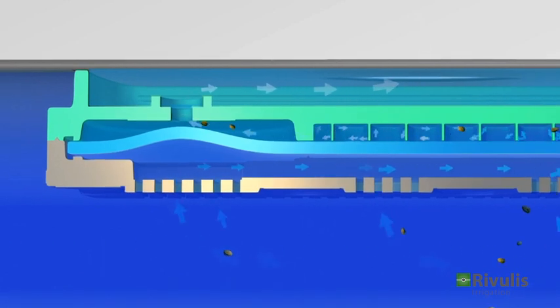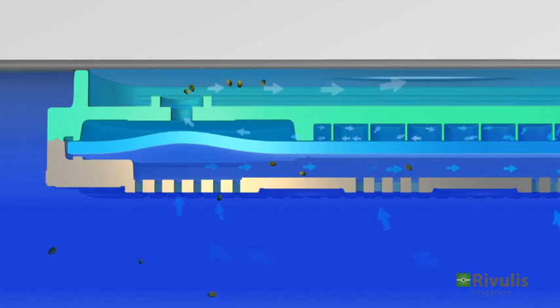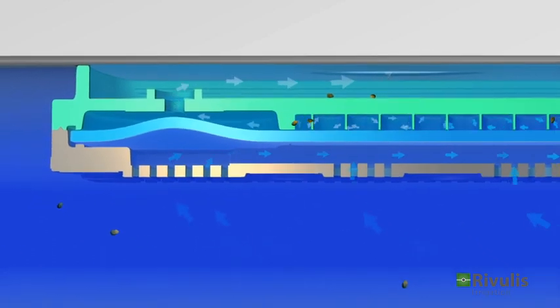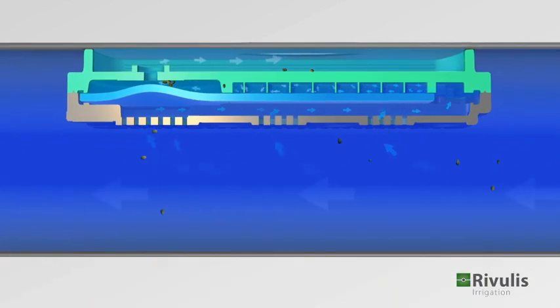When the forces on the upper side of the membrane build up, they push the membrane down, allowing the particles to be discharged. Once the particles are flushed out, the dripper will revert to its predetermined flow rate.